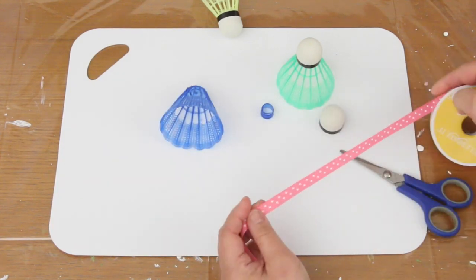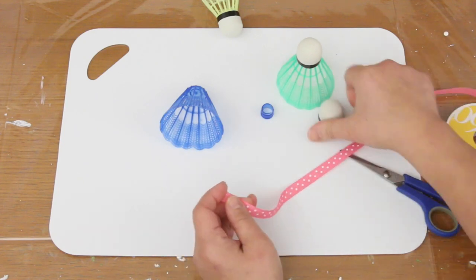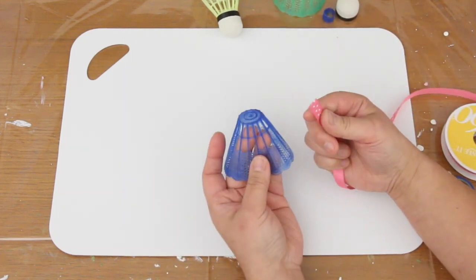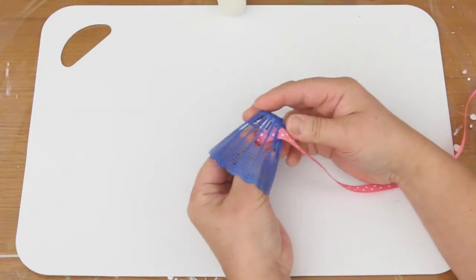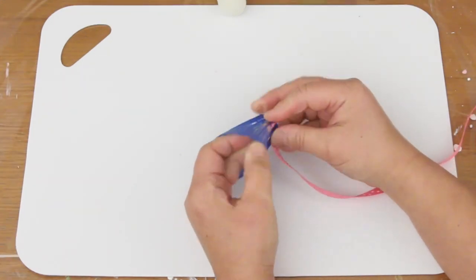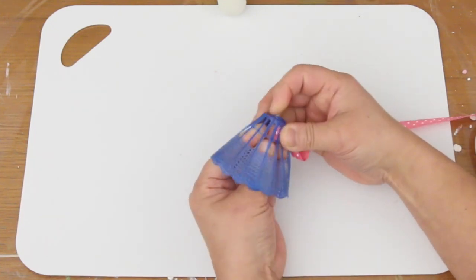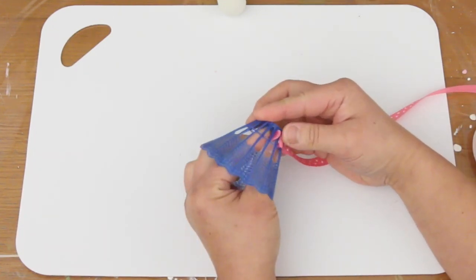I'm gonna use ribbon that's about a quarter inch wide. I'm going to weave it through the top section. Push it through an opening, come out the next opening, and back in. Repeat until the ribbon is back where it started.